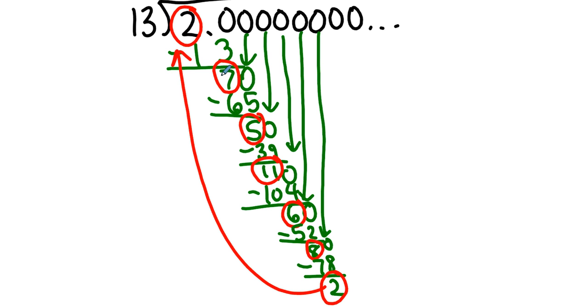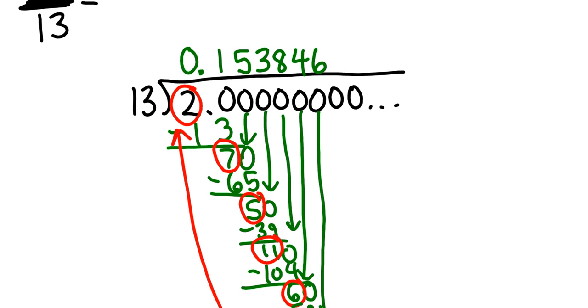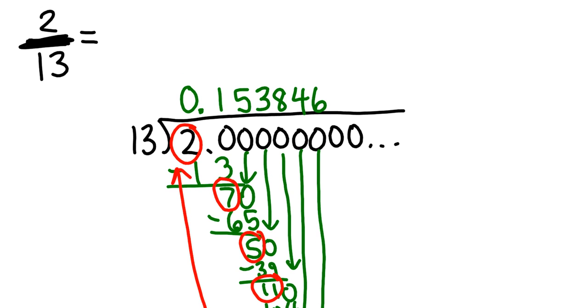And so we know that this will be the pattern the rest of the way. It'll be 153846 forever, 0.153846, where the entire block repeats. We put the vinculum over the entire repetend. These are the digits that repeat.